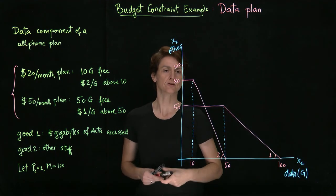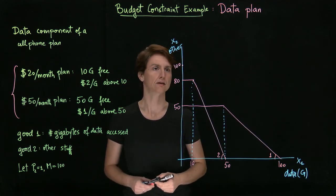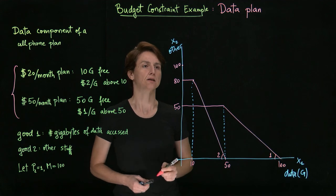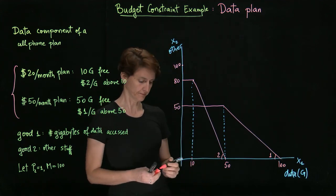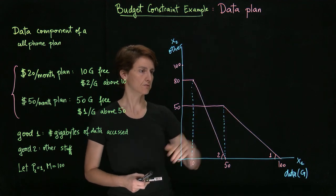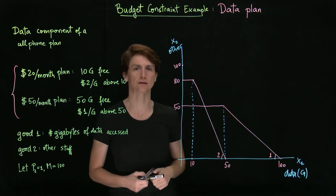So these two budget constraints are our option under the two plans, and this was the additional option of not buying a plan at all. So, of course, which one turns out to be more useful depends on individual preferences.